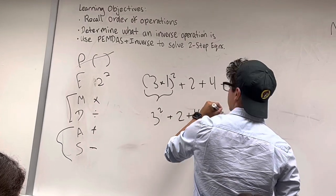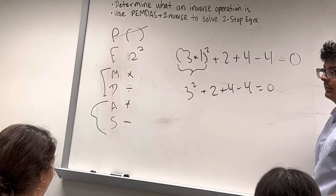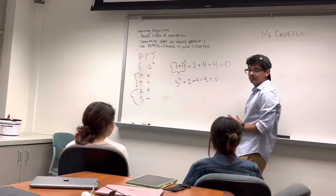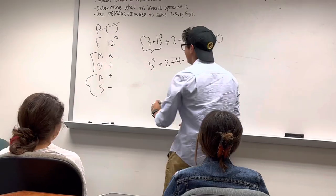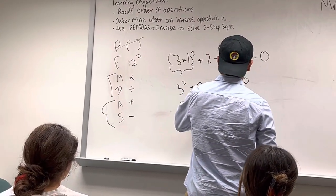Next we have exponents. So right here we have an exponent, and 3 squared is—do you know, Femi? 9. 9, yeah. And so we have 9 plus 2 plus 4 minus 4 is equal to 0.